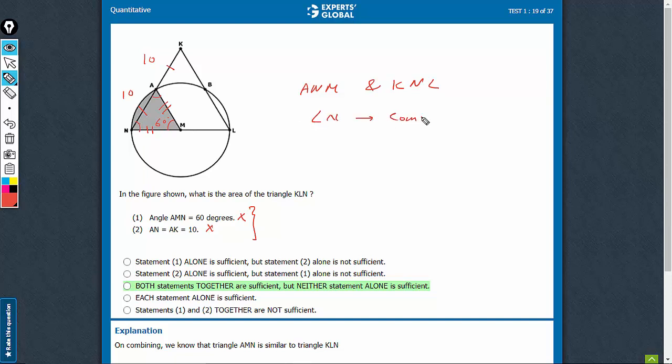So one angle becomes equal and one side is in proportion. The AN upon KN is equal to half. And same is the ratio for the other side is equal to NM upon NL. So therefore, we can say that triangle ANM and KNL are similar triangles.